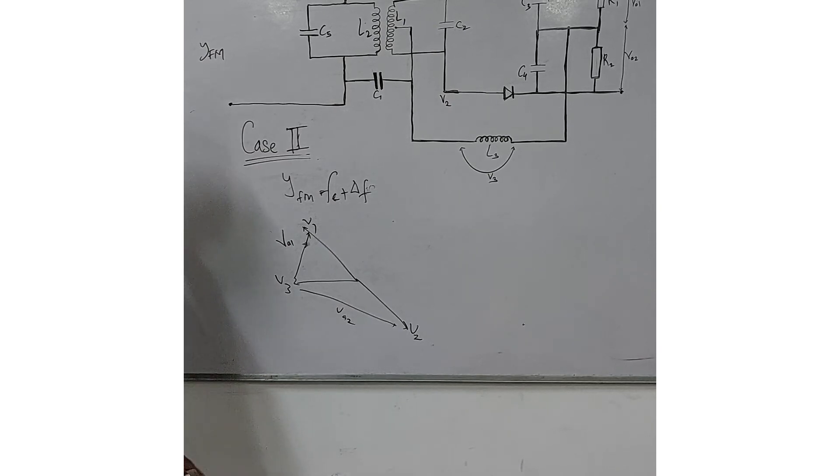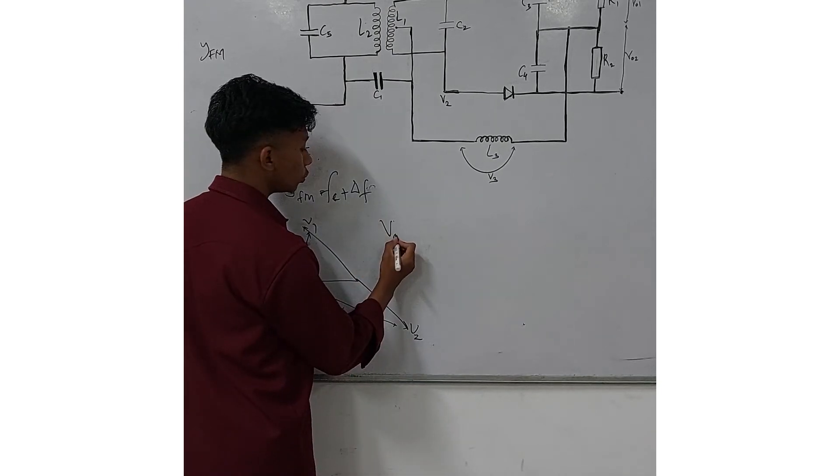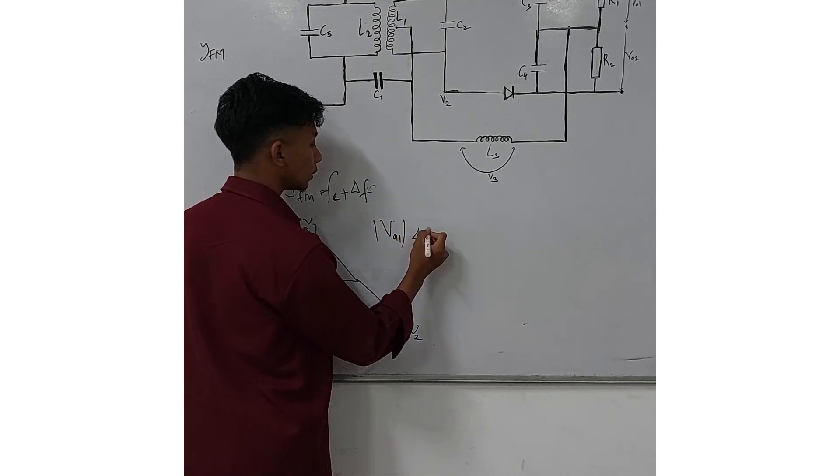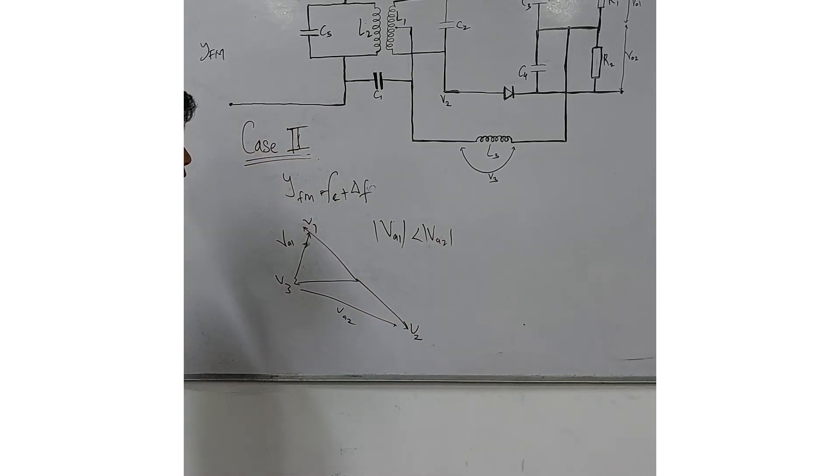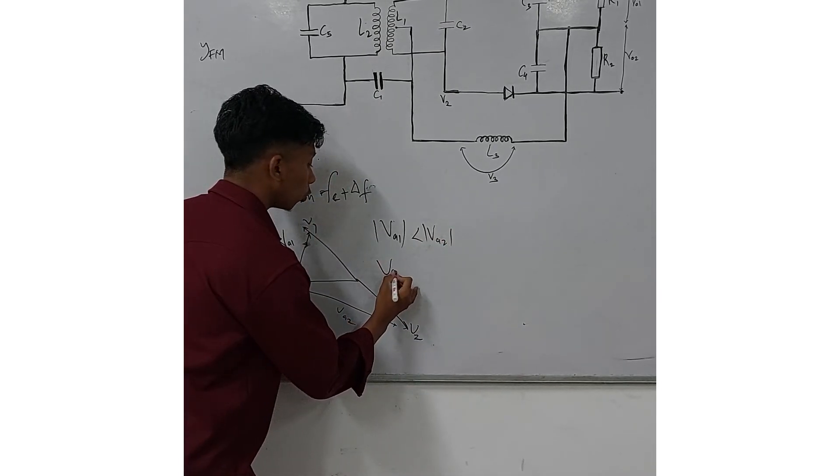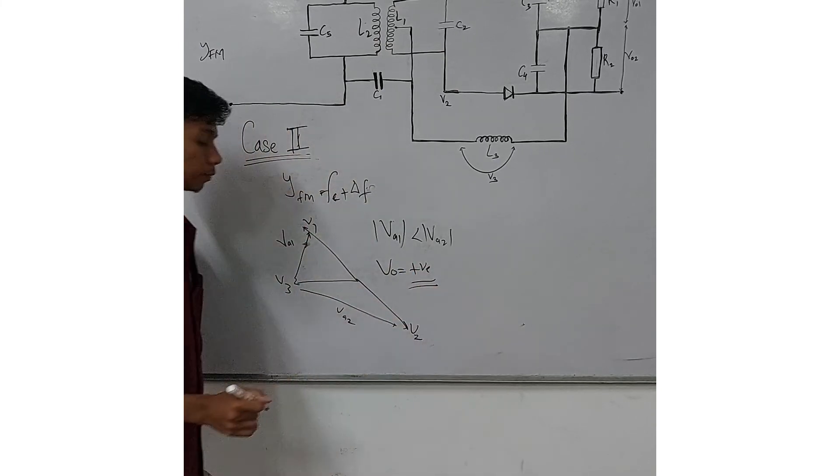Now we can see that the length of VA2 is longer than the length of VA1, meaning that the magnitude of VA1 is less than the magnitude of VA2. Thereby, using the output formula, we can see that the output voltage will be a positive voltage.